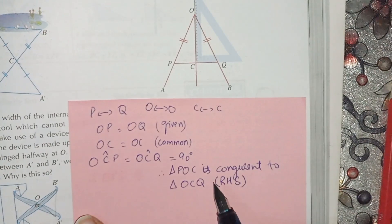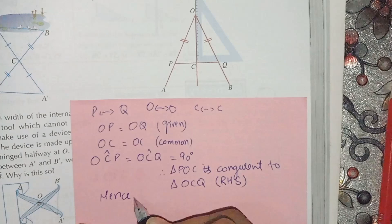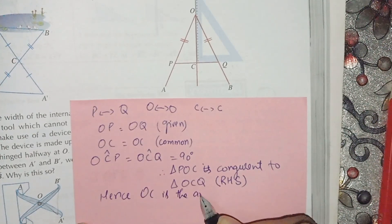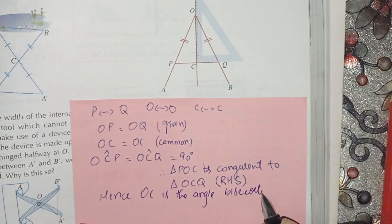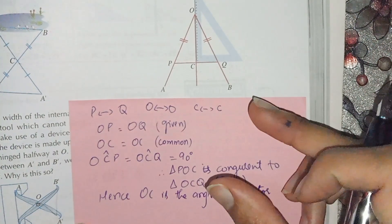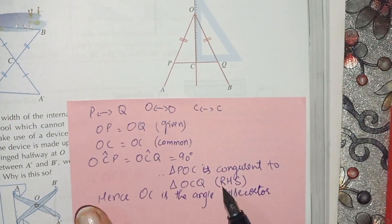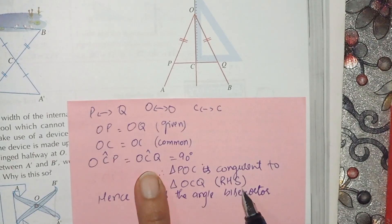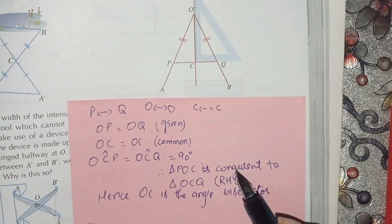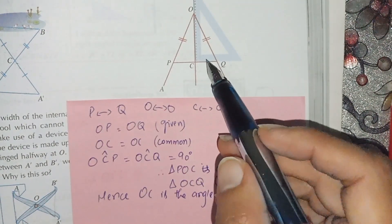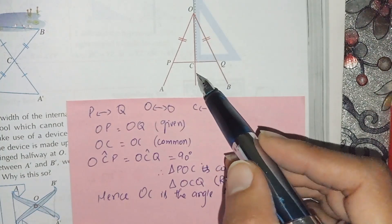This proves that OC is the angle bisector. When we prove the triangles are congruent by the RHS test, and both triangles are congruent, this proves that OC is the angle bisector. Question number four is solved.